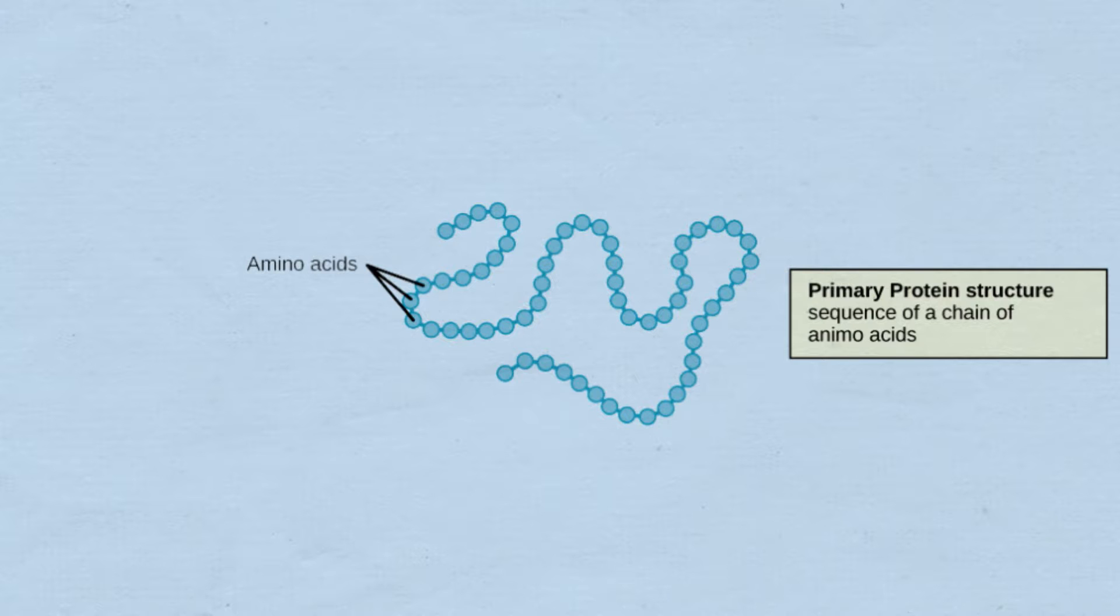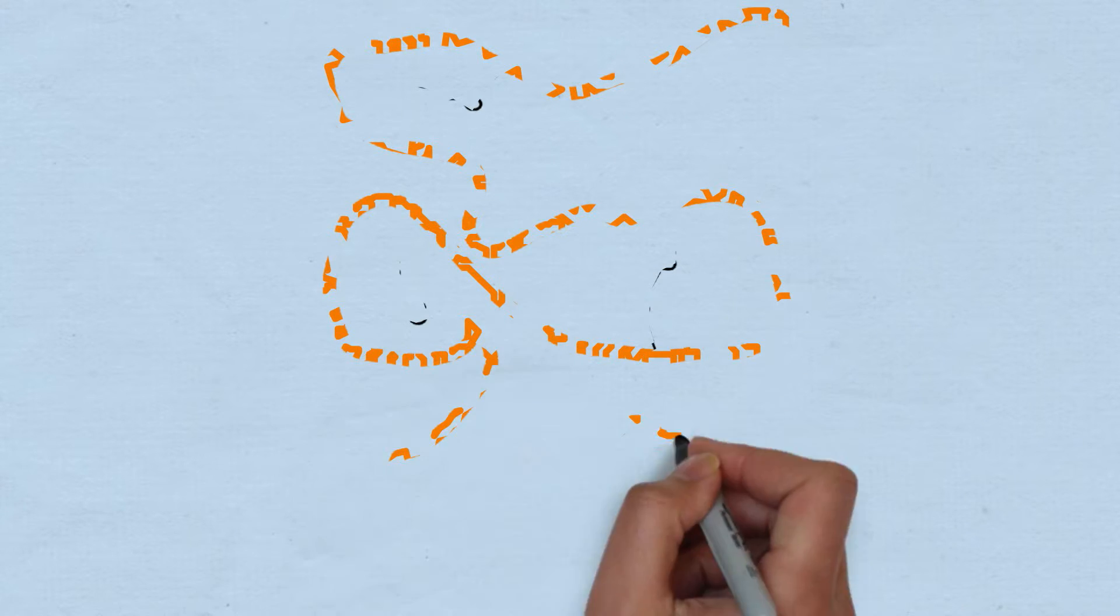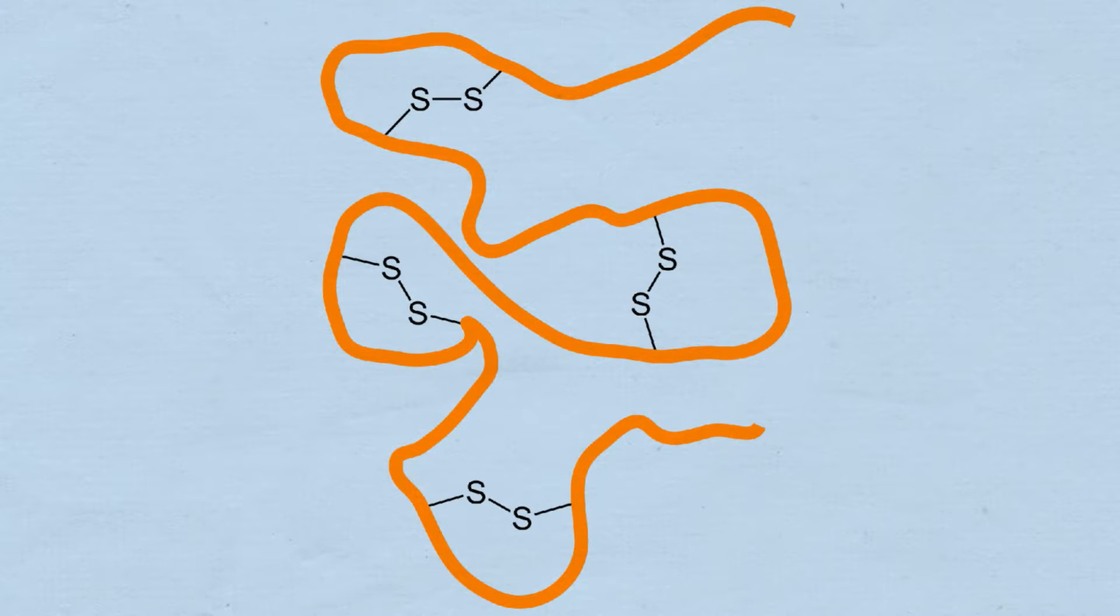For example, the amino acid cysteine contains the element sulfur. Two of these sulfur atoms can bond together to form a disulfide bond. The sequence of amino acids is important.